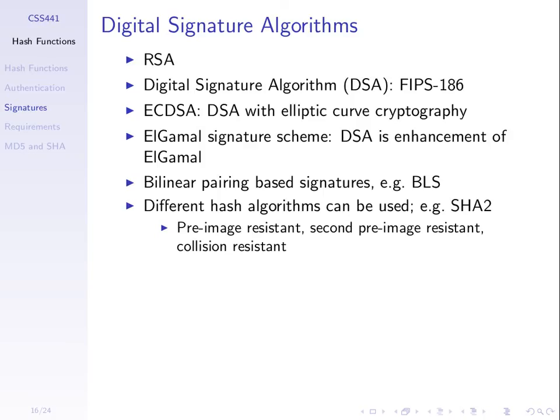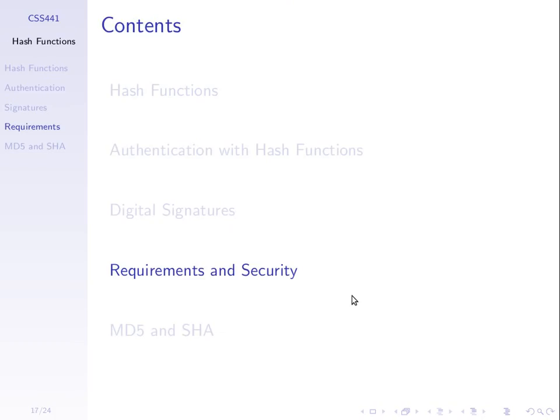Those hash algorithms need to have particular properties. We've talked about the general properties of collision-free and one-way property. We'll come back to those properties to finish the lecture today, define them a little further, as well as the global processes.